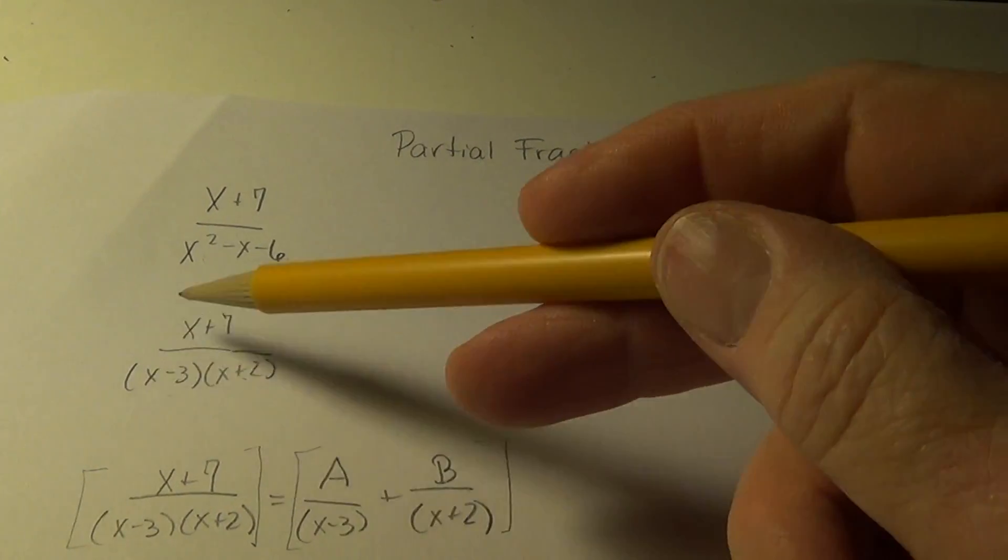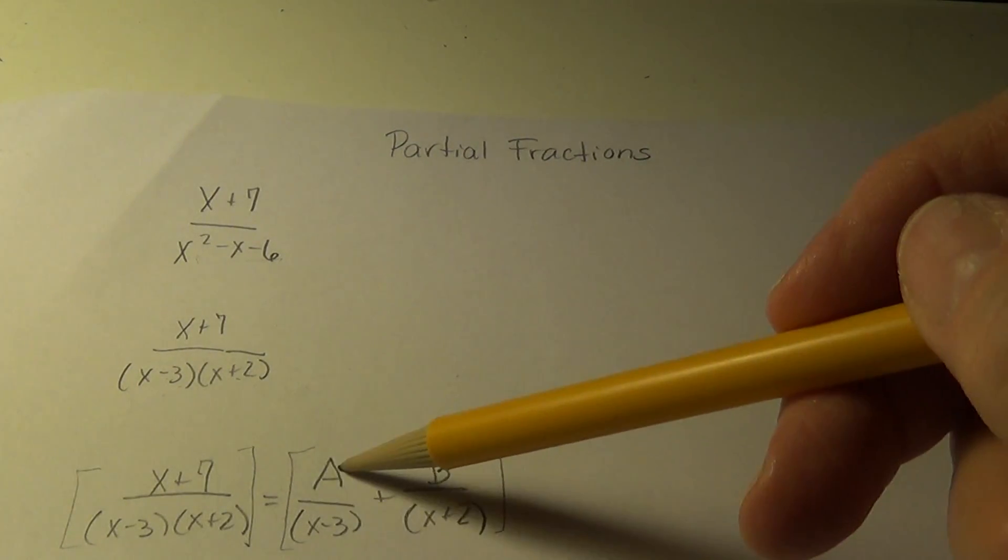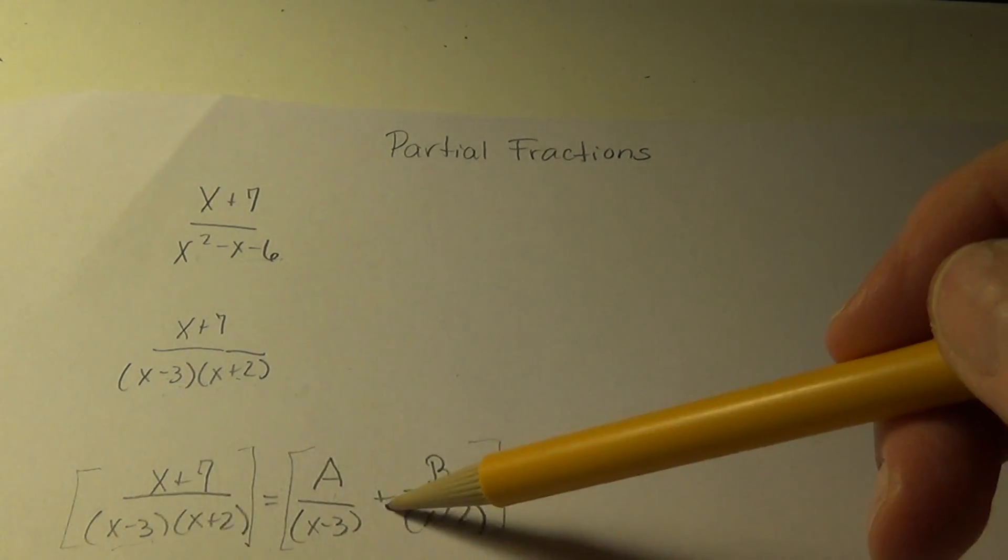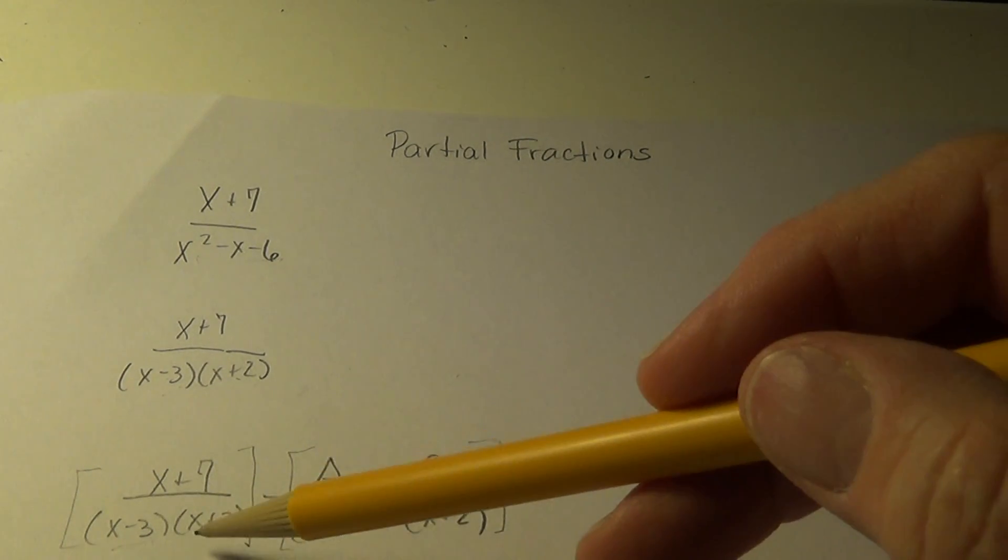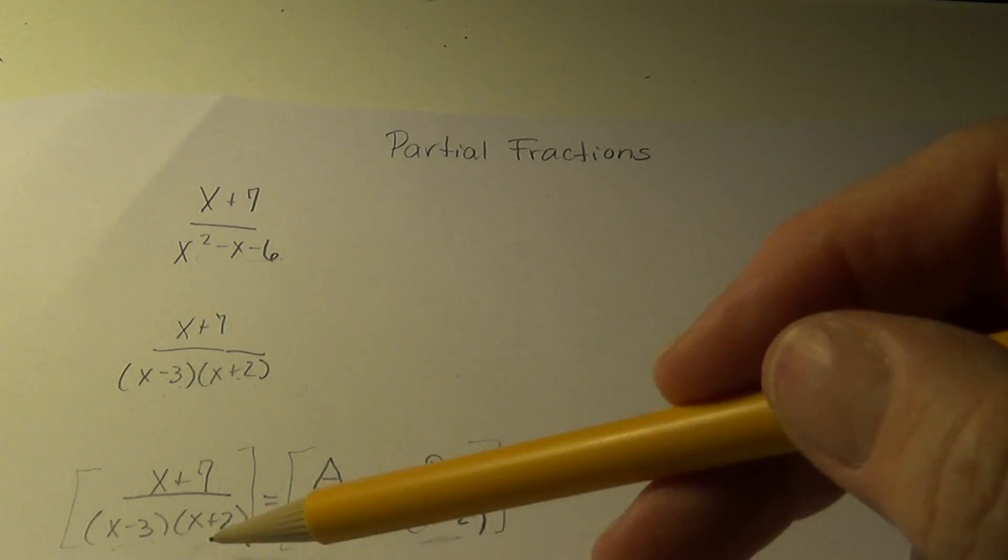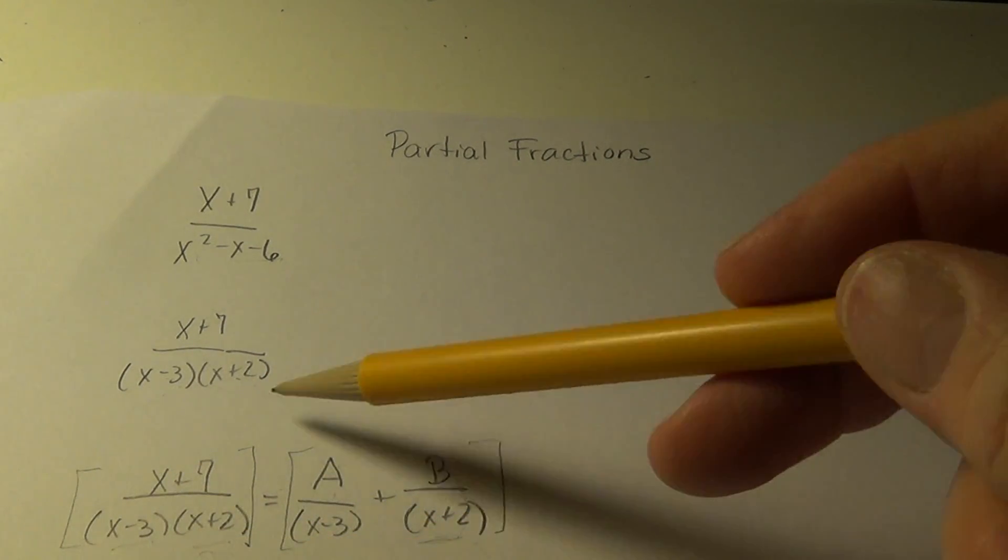So notice this expression is unchanged here equals unknown over this factor plus another unknown over this factor in the denominator. So this pattern will be followed.